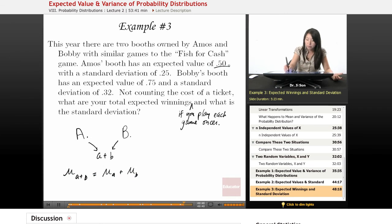And we have mu of a and b. So expected value of Amos's booth is 50, 50 percent, right? And the expected value of Bobby's booth is .75. So we add that together. The new mu is $1.25.